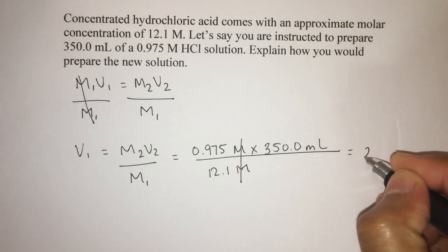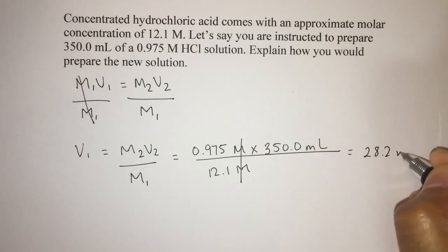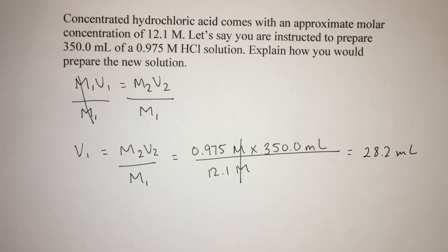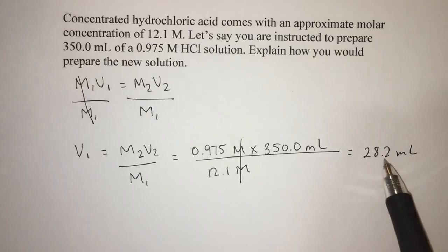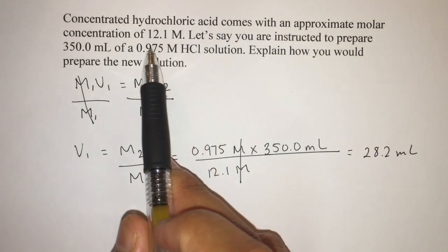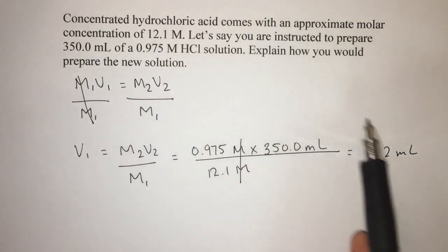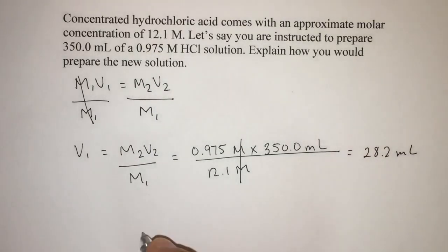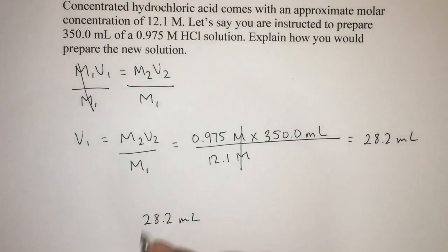So when we plug and chug here, our V1 is 28.2 milliliters. Okay, so what does that mean? This means that from our initial concentration, our initial solution, the 12.1 molar, we're going to take out 28.2 milliliters. And this is our original HCl solution.